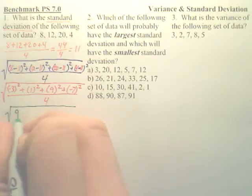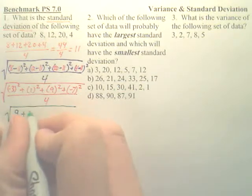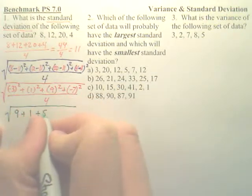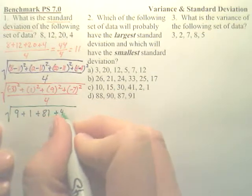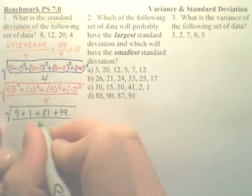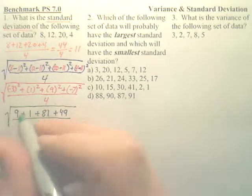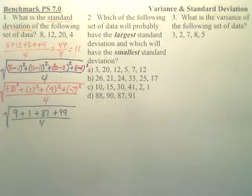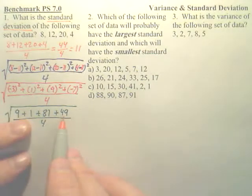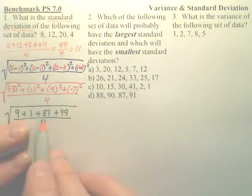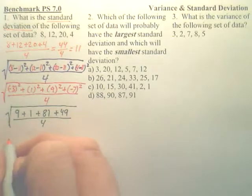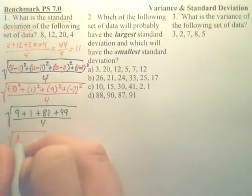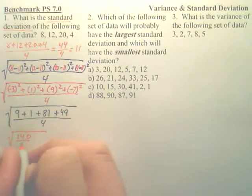Negative 3 squared is positive 9. 1 squared is 1. 9 squared is 81. And negative 7 squared is 49. Don't forget that 4 is inside the whole square root. And you add up all this top. 1 plus 49 is 50. 81 plus 9 is 90. 50 plus 90 is?